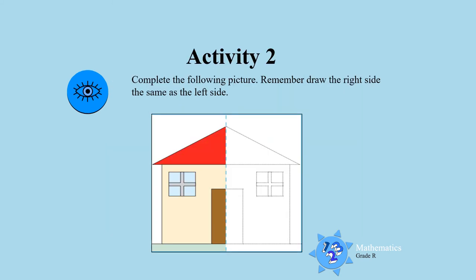Activity two. I want you to look at the house, complete the picture and remember again symmetry. What is on the left must also be on the right. So let's go and see what you can do.